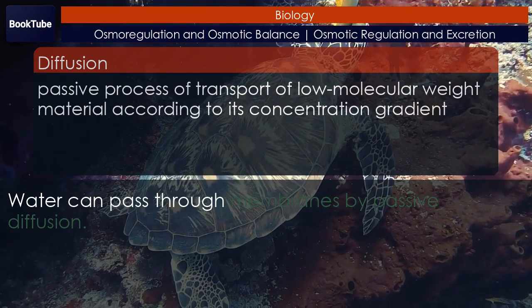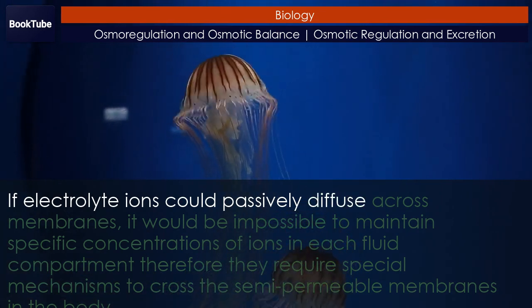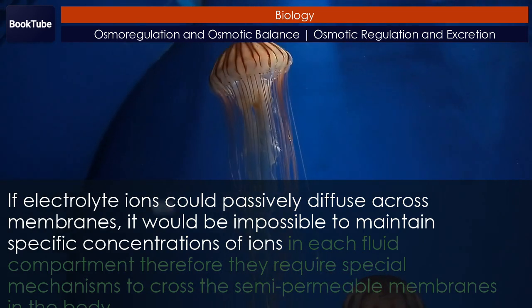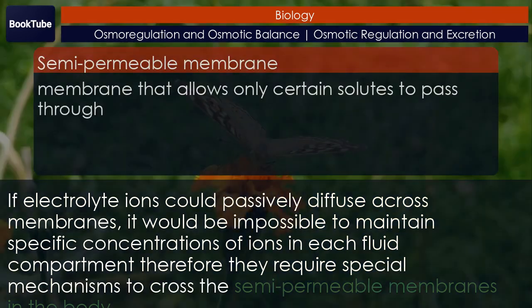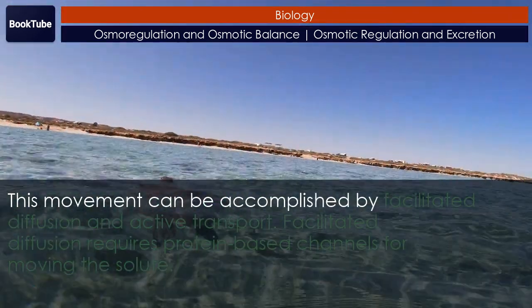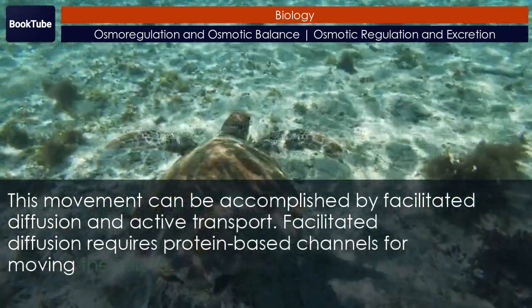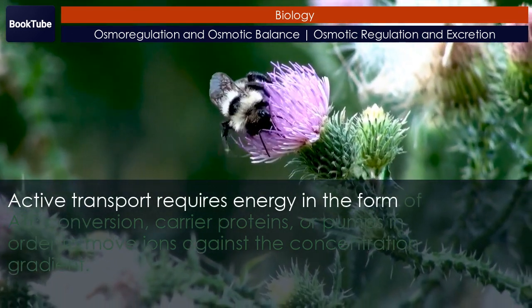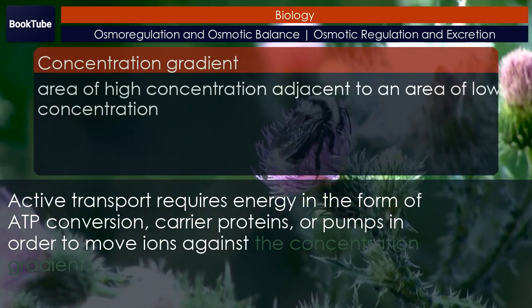Water can pass through membranes by passive diffusion. If electrolyte ions could passively diffuse across membranes, it would be impossible to maintain specific concentrations of ions in each fluid compartment. Therefore they require special mechanisms to cross the semi-permeable membranes in the body. This movement can be accomplished by facilitated diffusion and active transport. Facilitated diffusion requires protein-based channels for moving the solute. Active transport requires energy in the form of ATP conversion, carrier proteins, or pumps in order to move ions against the concentration gradient.